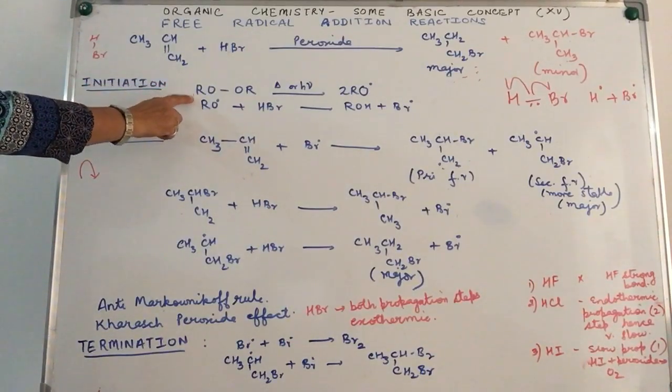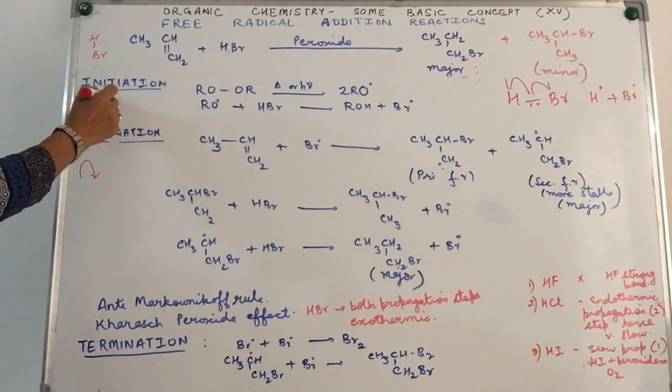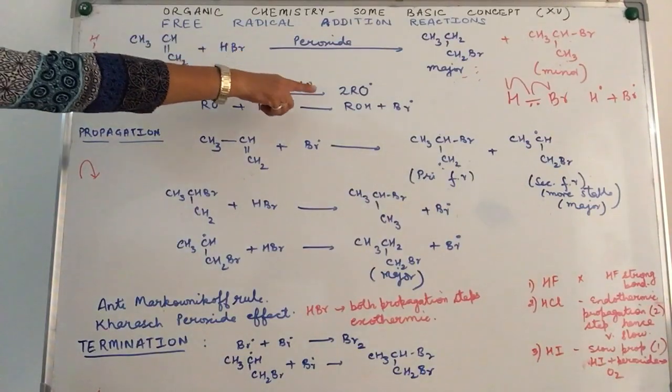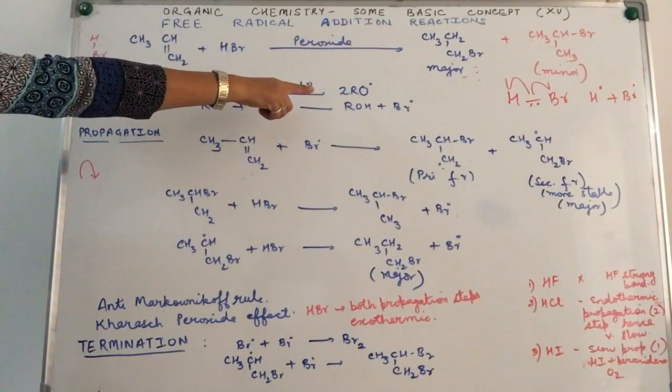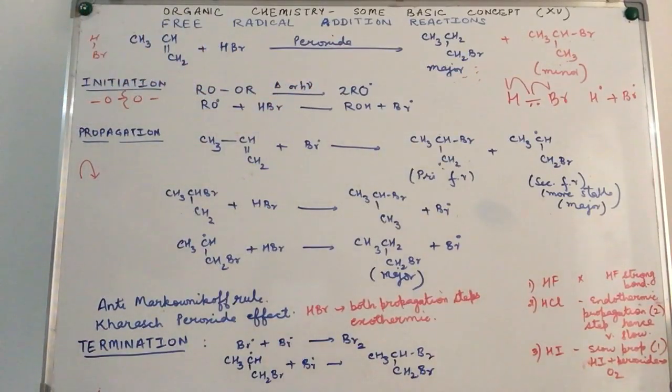Initiation in this step happens by the use of peroxide. The peroxide molecule has this kind of a bond in it, so the peroxide molecule breaks homolytically, either because of the heat or the light, to give us the free radical RO dot. Now here we are using a generalized structure. Usually we'll take benzoyl peroxide during the course of this reaction, so C6H5-CO dot is what is formed over here.